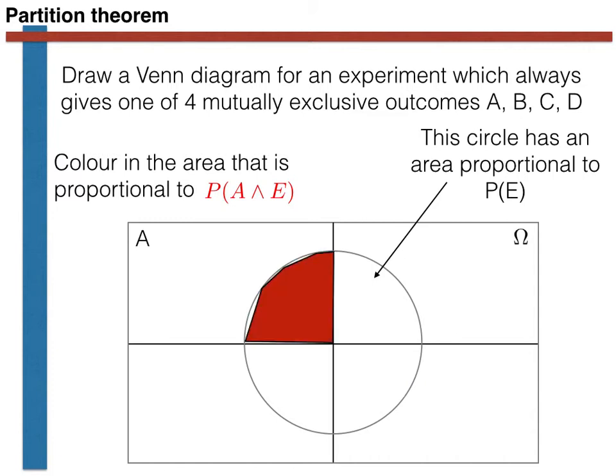You should have coloured the area shown here. Now try the same experiment but use a blue pen and colour the area proportional to the probability that B and E happen simultaneously.